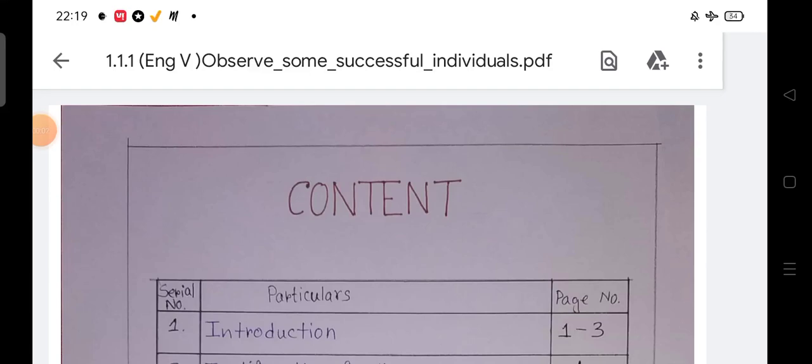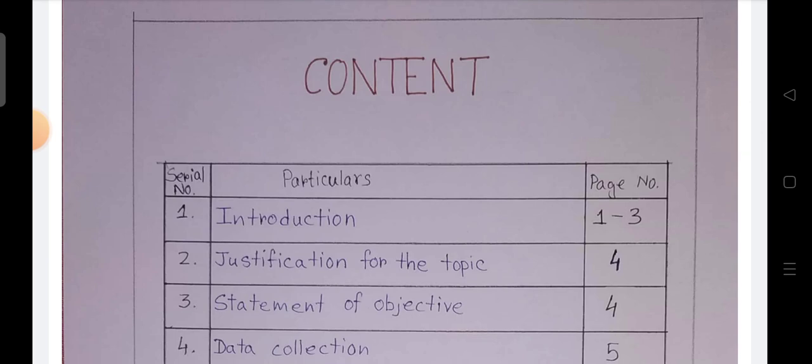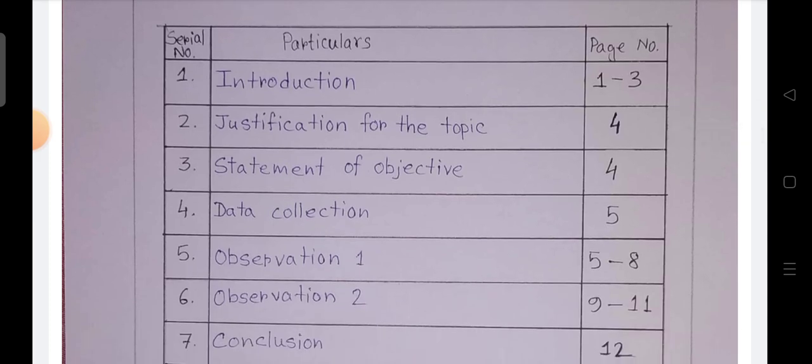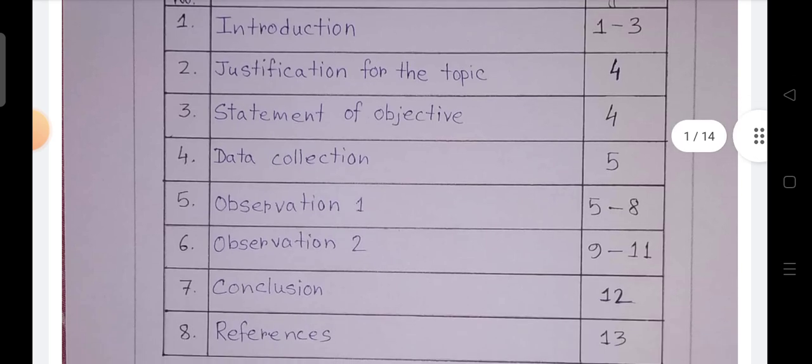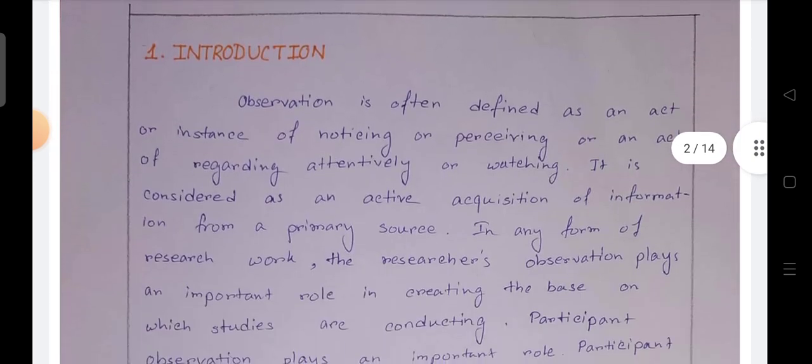We observe some successful individuals. Here we see the content page. We all know that at first when writing some practicums or learning designs, there must be present a content part. Index number, another meaning is index to content. Here is a content with three parts: serial number, particulars, and page number. The sections include introduction, justification for the topic, statement of objective, data collection, observation 1, observation 2, conclusion, and references.